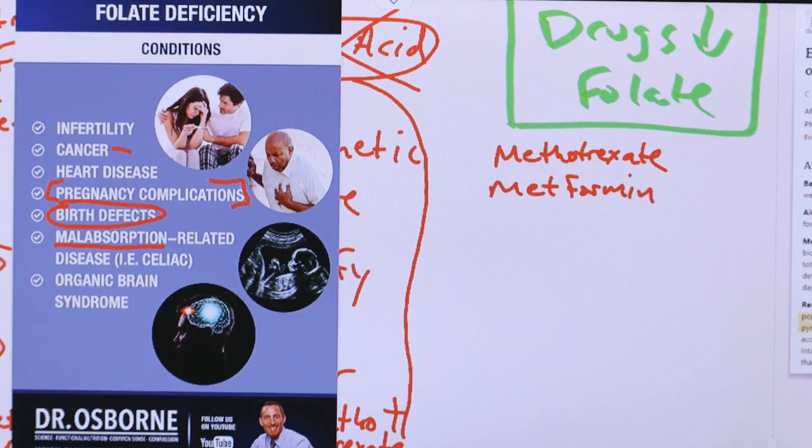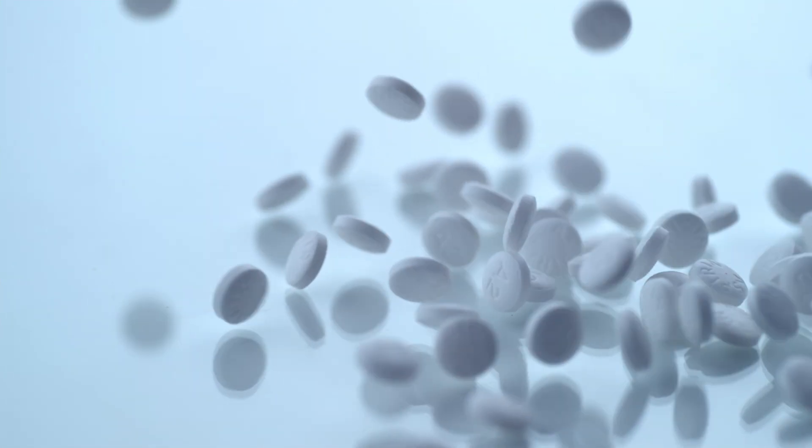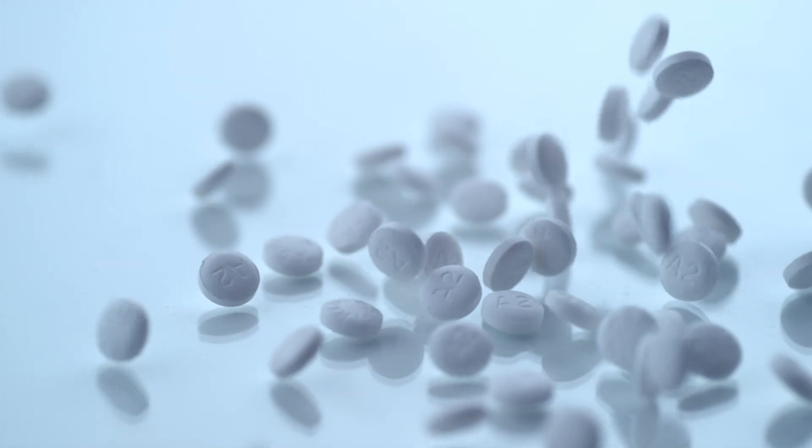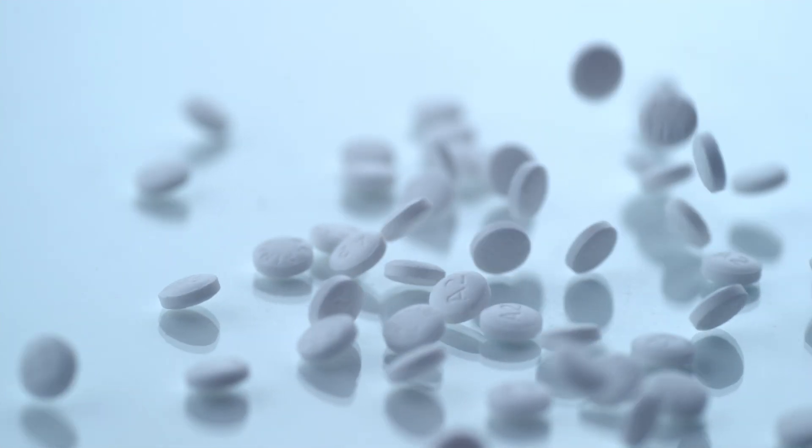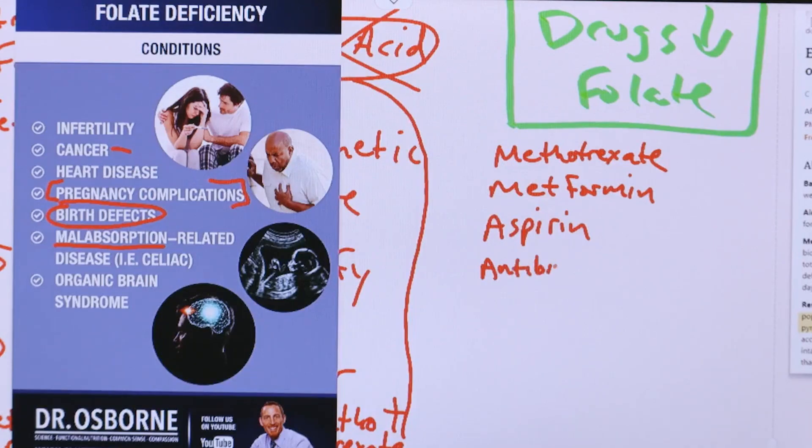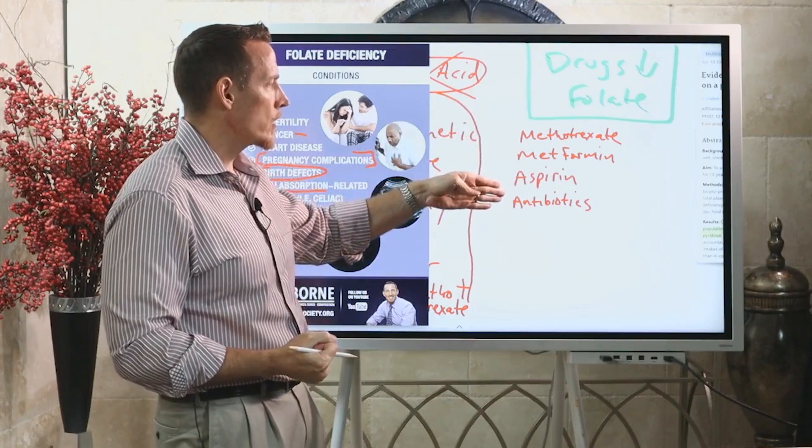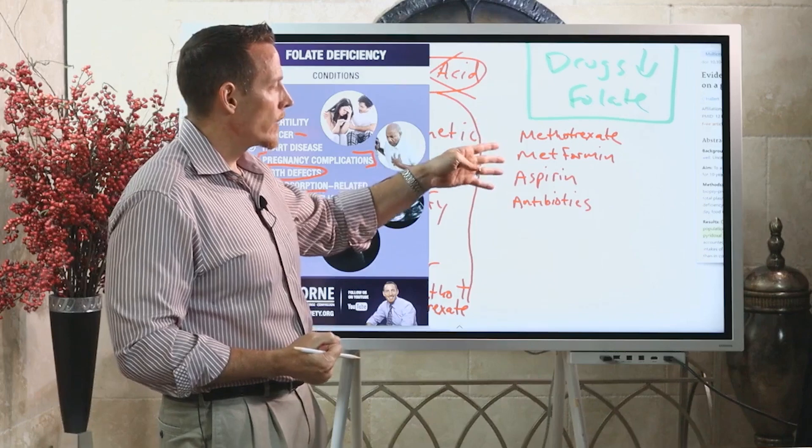Number three, aspirin. Those of you who have heart disease and your doctor has told you to take aspirin to keep your blood thin, this can also cause folate deficiency. Number four, antibiotics. There are a number of different antibiotics that can interfere with folate. Some of the folate is actually produced by our probiotics, by our good healthy bacteria, so antibiotics knocking out those good bacteria can actually reduce your level of folate as well.